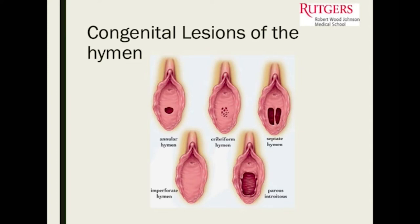That's the imperforate hymen, where the hymen completely obstructs the vaginal introitus. This is an annular hymen. This is a cribriform where the hymen has little small perforations. You can have a septate hymen. The imperforate hymen presents with primary amenorrhea with cyclic pelvic pain — the menstrual blood is forming but not coming out because it's blocked.